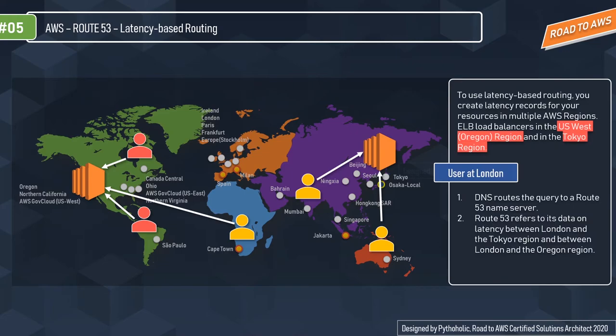To summarize: with latency records across multiple regions, when a user from London requests a resource, Route 53 checks the latency tables and, based on which location has the lowest latency, redirects the traffic to that particular region.